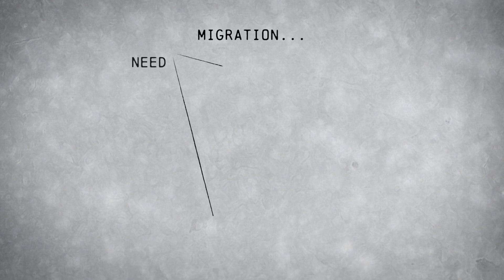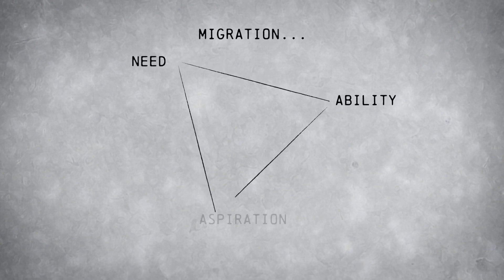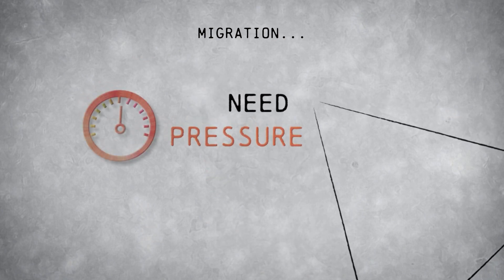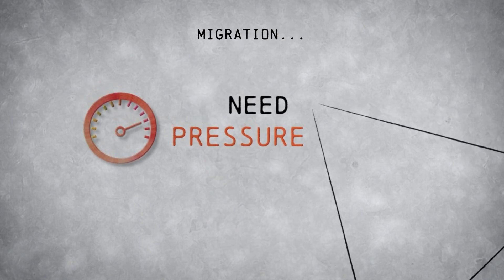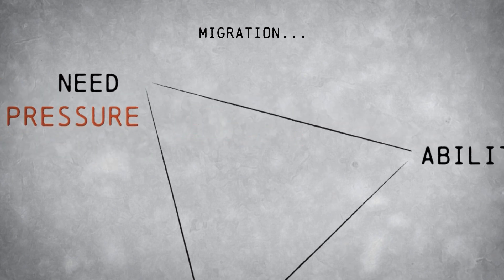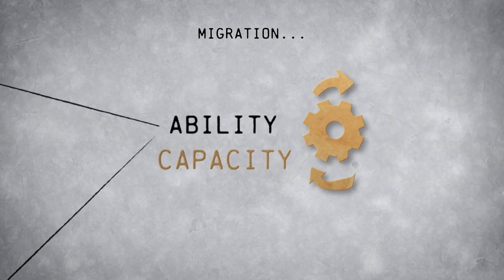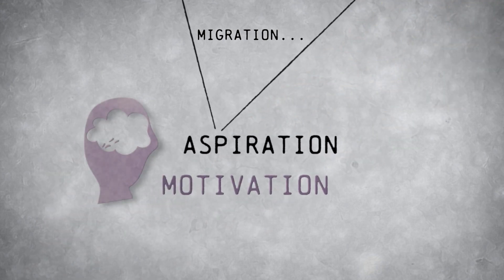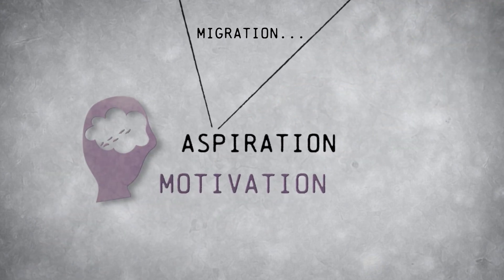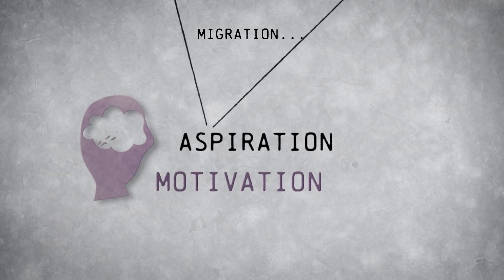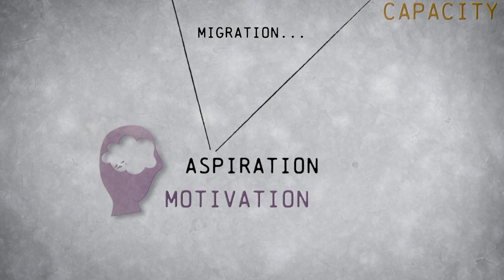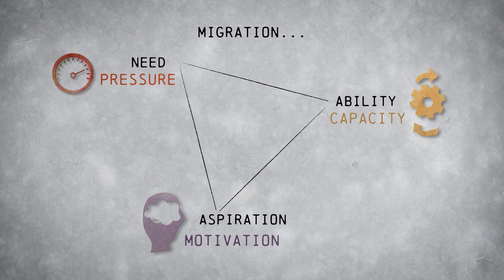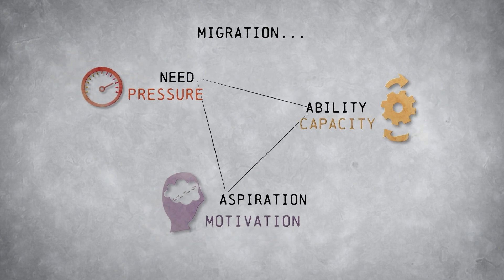Migration theory can help us understand this. Migration need looks at the pressure on people to move. Migration ability is the capacity of people to move. Migration aspirations reflect people's motivation to move. These three aspects influence the decision to move or stay, and their relationships are quite intertwined.